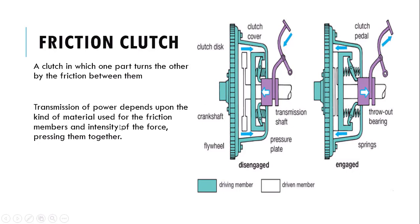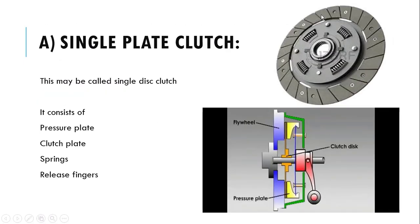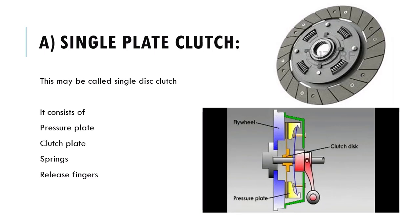The transmission of power depends upon the kind of material used for the friction member, so better quality material should be used. The friction clutch is divided into three classes: disc plate clutch, cone clutch, and the disc plate is further divided into single and multiple plate. In a single plate clutch, there is only one plate used for the engagement and disengagement of the clutch with your flywheel. It consists of a pressure plate, clutch plate, spring, and release finger. A single friction plate is used to transmit power from the flywheel to the gearbox.